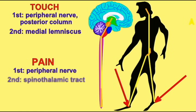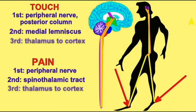For both pain and touch, the third order neuron travels from the thalamus to the somatosensory cortex of the cerebrum where we are consciously aware of the stimulus.